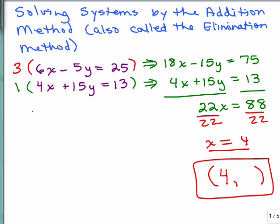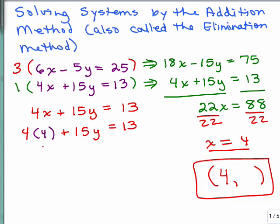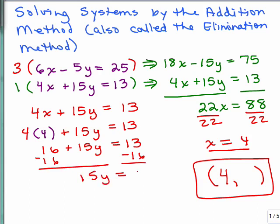So let's say I took the second equation, 4X plus 15Y equals 13, and I'm going to plug in 4 for X. And simplify the left-hand side, subtract 16 from both sides, gives me negative 3 divided by 15. And oh joy, we have a fraction, but remember fractions are numbers too. So it looks like the Y value is negative one-fifth, if I didn't make any mistakes.